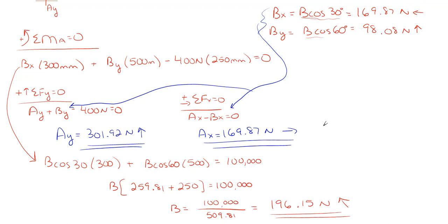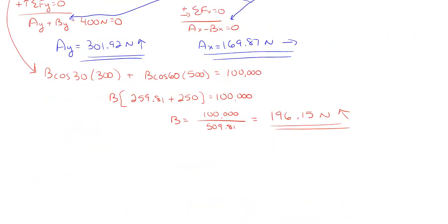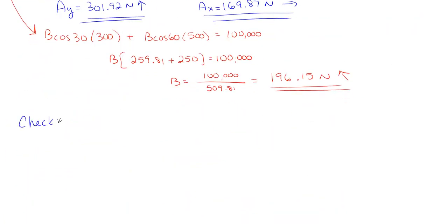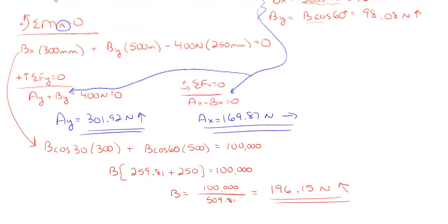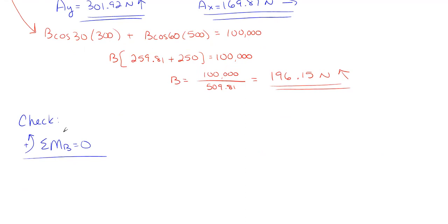And those are my three answers for my reactions. So there is a way to check your answers to make sure that you have done this correctly. And what I'm going to do, since I summed moments here at A in the beginning, I'm going to sum moments up here at B, checking my A sub x and my A sub y reactions. So let's go ahead and let's do that check real quick. So I'm going to sum moments at B and everything has to cancel and be equal to zero. So the 400 newtons is 250 away from B, A sub y is 500 millimeters away from B, and then A sub x is perpendicular to 300 millimeters from B. So just keep that in mind as I'm writing out the equation.